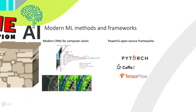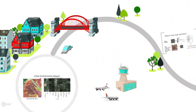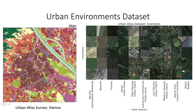For this, we compile a new dataset to study urban environments. This dataset consists of satellite imagery with their corresponding land use labels. The satellite images have been obtained from the Google Maps API. The labels have been obtained from Urban Atlas, a large-scale land use survey by the European Union of over 300 cities in Europe.